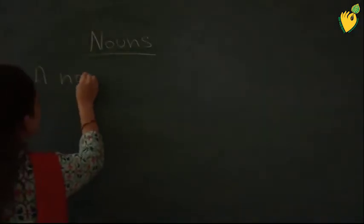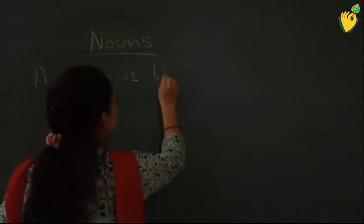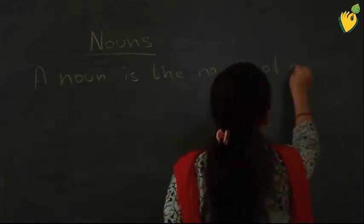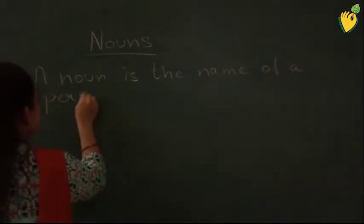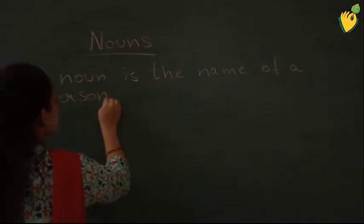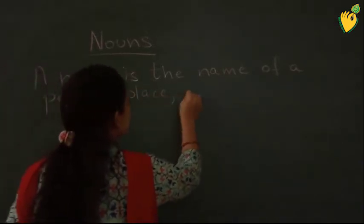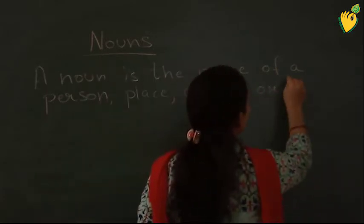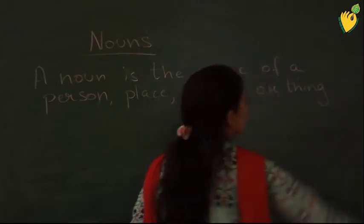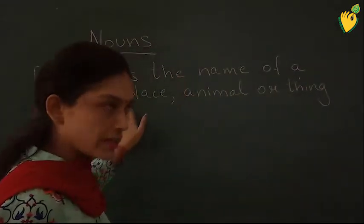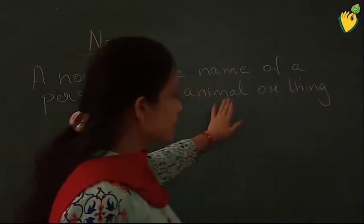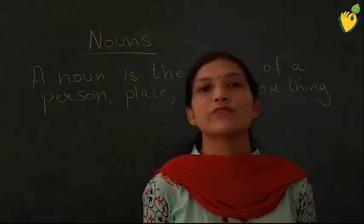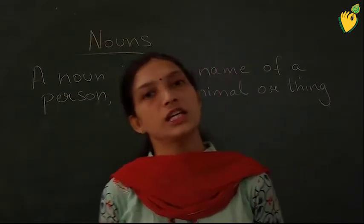A noun is the name of a person, place, animal, or thing. Around us there can be many persons, many places, many animals, and many things. For persons, there can be mother, father, teacher, farmer, doctor — they are the names of persons.